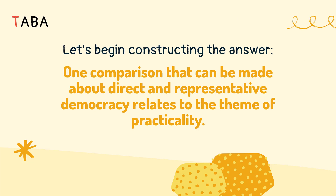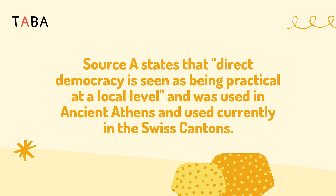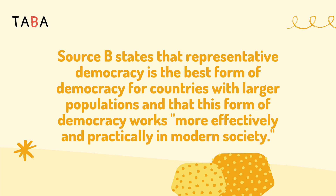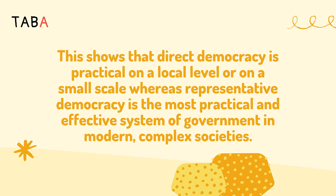Let's begin constructing the answer. One comparison that can be made about direct and representative democracy relates to the theme of practicality. Source A states that direct democracy is seen as being practical at a local level, and was used in ancient Athens and currently in the Swiss cantons. Source B states that representative democracy is the best form of democracy for countries with larger populations, and that this form of democracy works more effectively and practically in modern society. This shows that direct democracy is practical on a small scale, whereas representative democracy is the most practical and effective system of government in modern, complex societies.